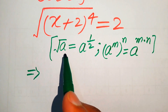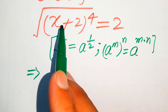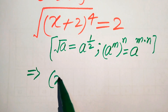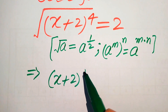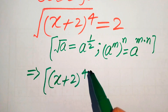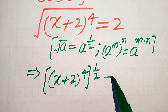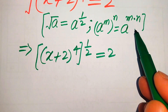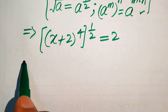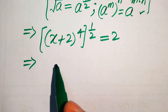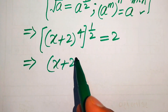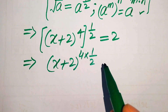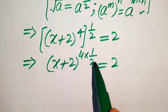Here first we apply this and convert our expression into exponential form. We write it as (x+2)^4 to the whole power of 1/2, equals 2. Then we use the exponential law and multiply the two exponents, giving us (x+2) to the power of 4 multiplied by 1/2, equals 2.